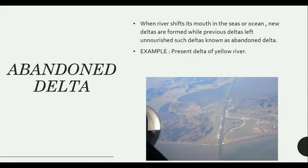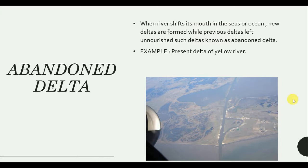Now let's talk about Abandoned Delta. When a river shifts its mouth in the sea or ocean, new deltas are formed while previous deltas are left unnourished — such deltas are known as Abandoned Deltas. An example is the present delta of the Yellow River, which is becoming abandoned because the channel or the river's course upstream is changing.